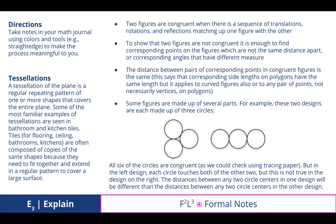Two figures are congruent when they're in a sequence of translations, rotations, and reflections, matching up one figure with another. To show that two figures are not congruent, it's enough to find corresponding points on the figures which are not the same distance apart, or corresponding angles that have different measures.